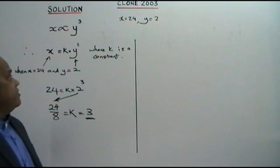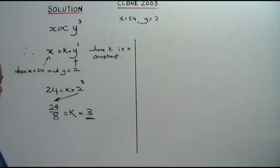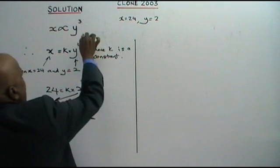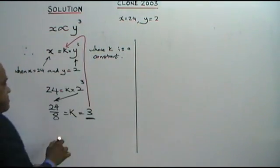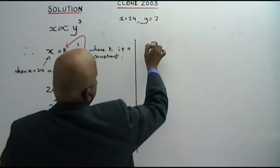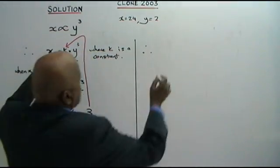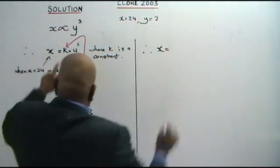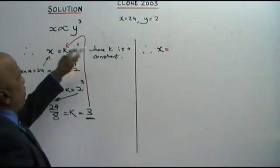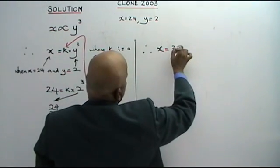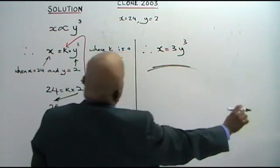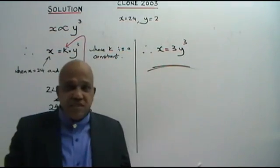Therefore K equals 3. This is important — the value of K. We substitute the value of K back in, so therefore X is equal to 3 times Y cubed. That is your answer.